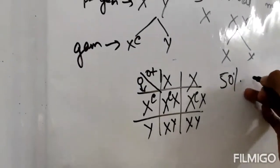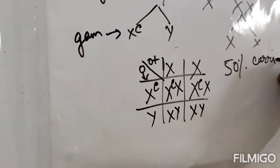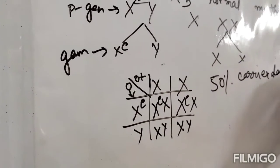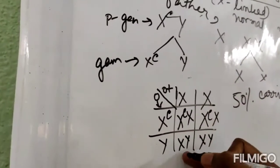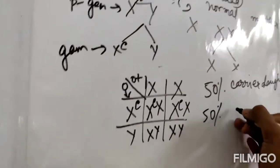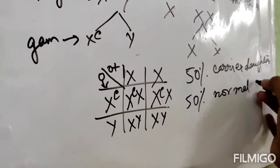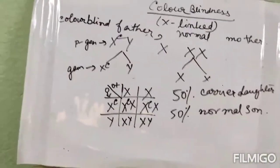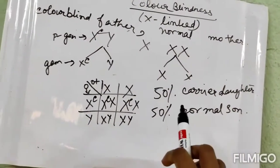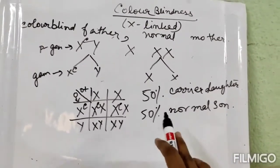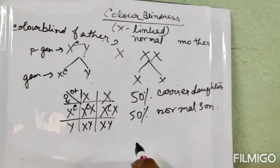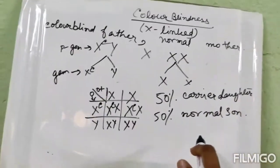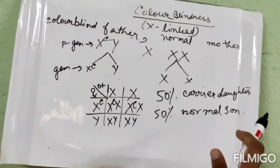The probability is 50% of having a carrier daughter and 50% of having a normal son. So if a color blind man marries a normal woman, there is a 50% chance of a carrier daughter and 50% chance of a normal son. If it is a daughter, the daughter will be a carrier; if it is a son, the son will be normal.